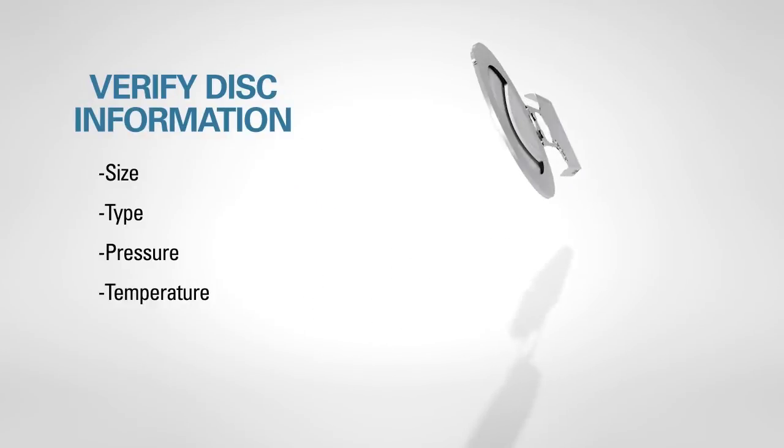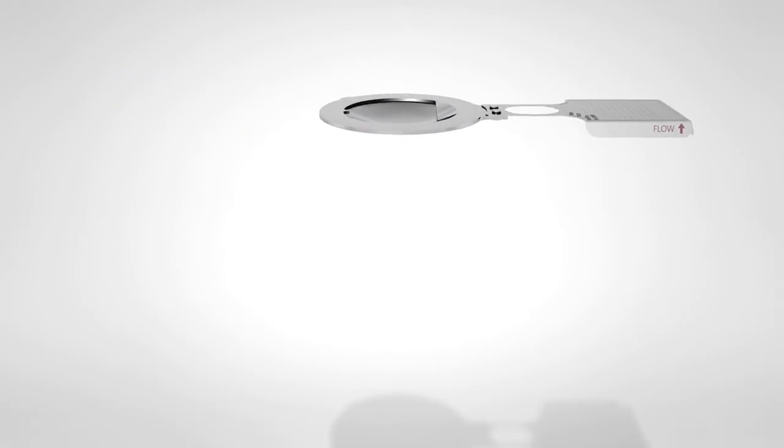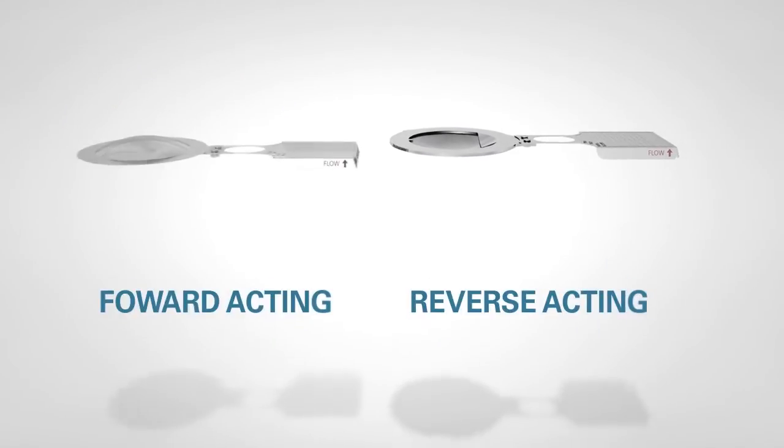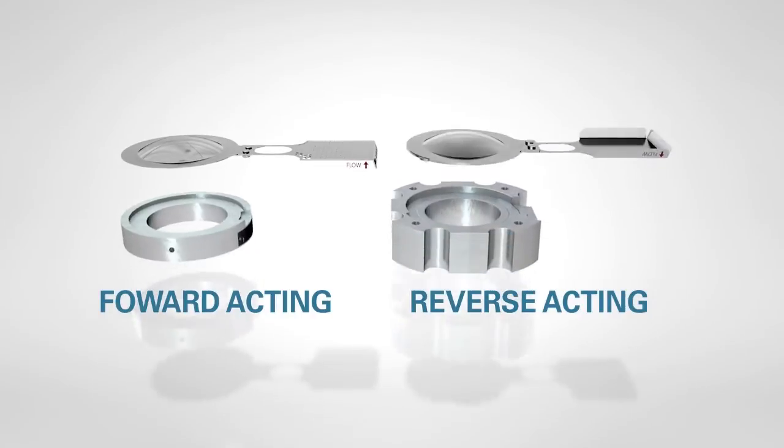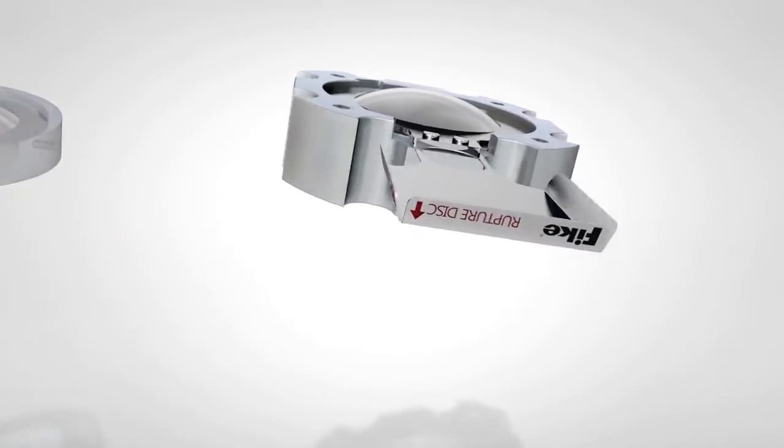After verifying that you have the correct rupture disc, carefully place forward acting rupture discs into the base of the holder, or if the disc is reverse acting, carefully place it into the hold down.